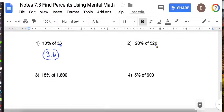Okay, 20% of 520. Remember to take 10%, which is 52. And now we're going to double it by multiplying by 2. And 52 times 2 is 104.